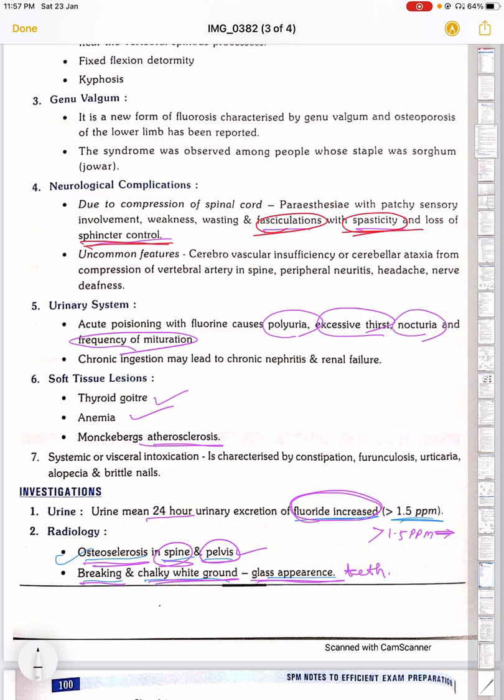What are the urinary manifestations? Polyuria, excessive thirst, nocturia, and frequency of micturition - increased frequency of urination. These are the urinary manifestations. Endemic fluorosis also causes thyroid goiter, anemia, and atherosclerosis.